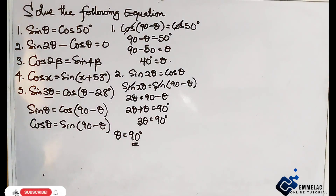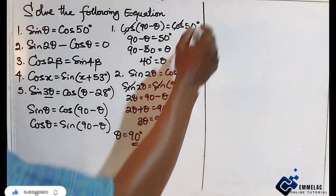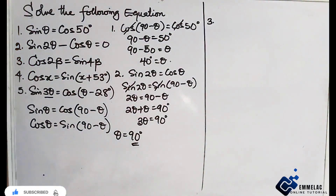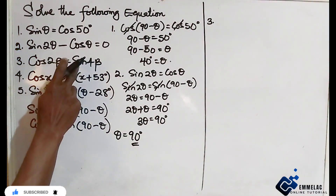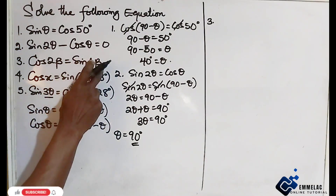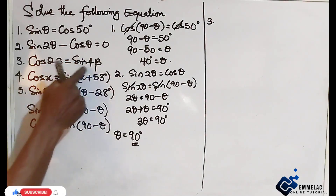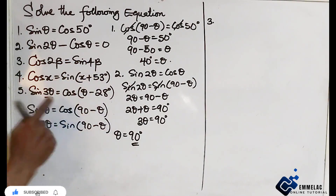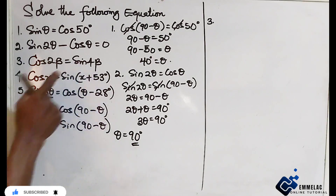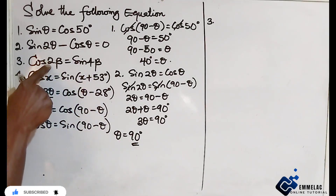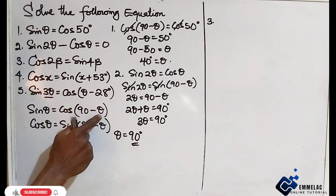Number 3. Here we have cos 2 beta equals sin 4 beta. We can substitute for either function. We ensure that wherever theta appears, we replace it with 2 beta.